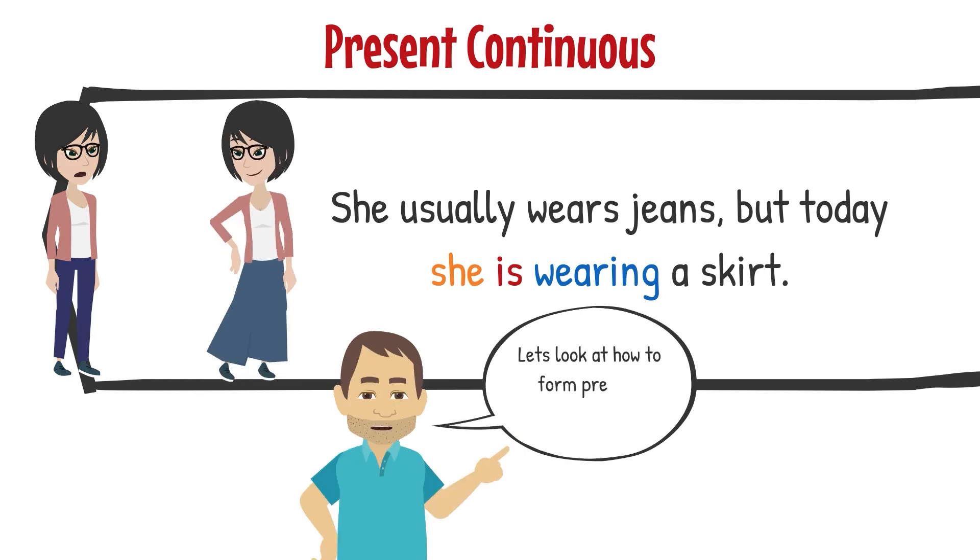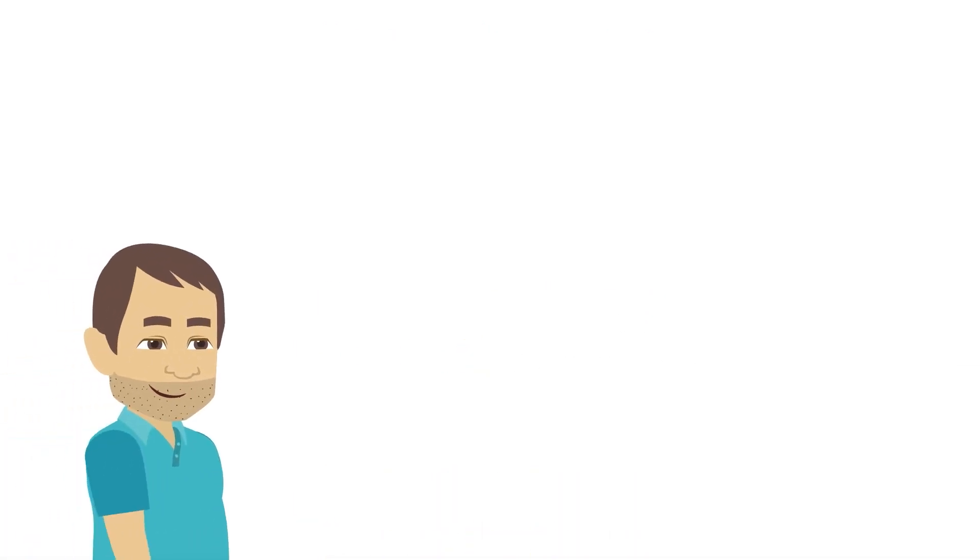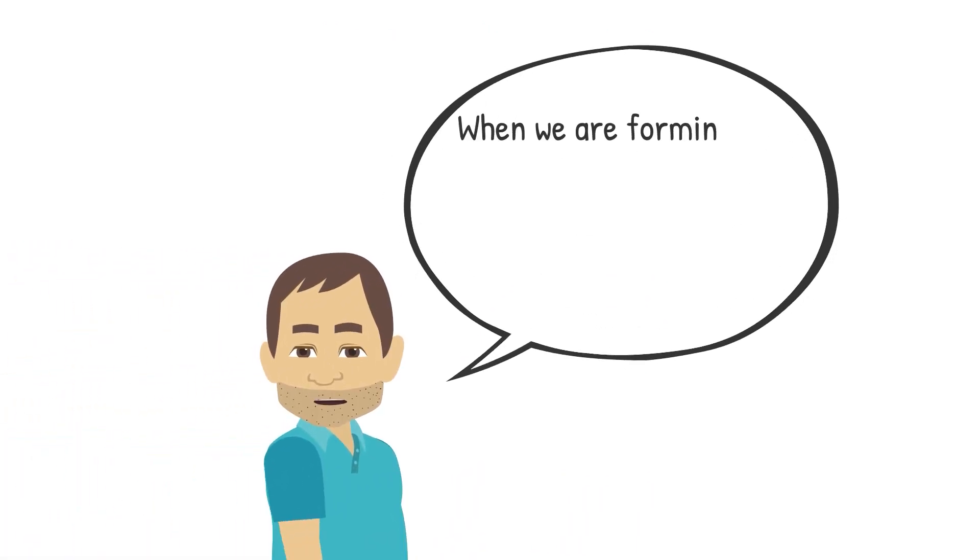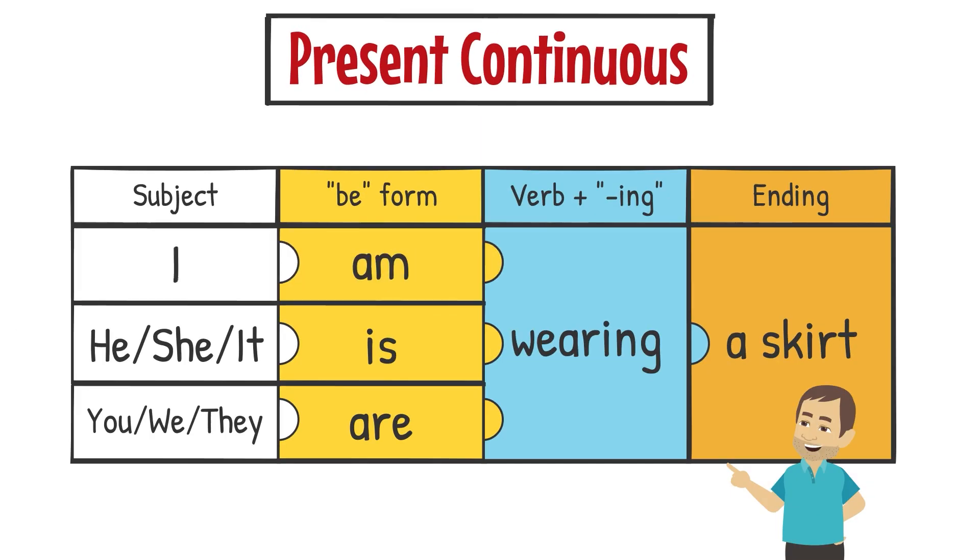Let's look at how to form present continuous sentences. When we are forming the present continuous, the be verb form changes with the subject. I am, he is, she is, it is, you are, we are, they are.